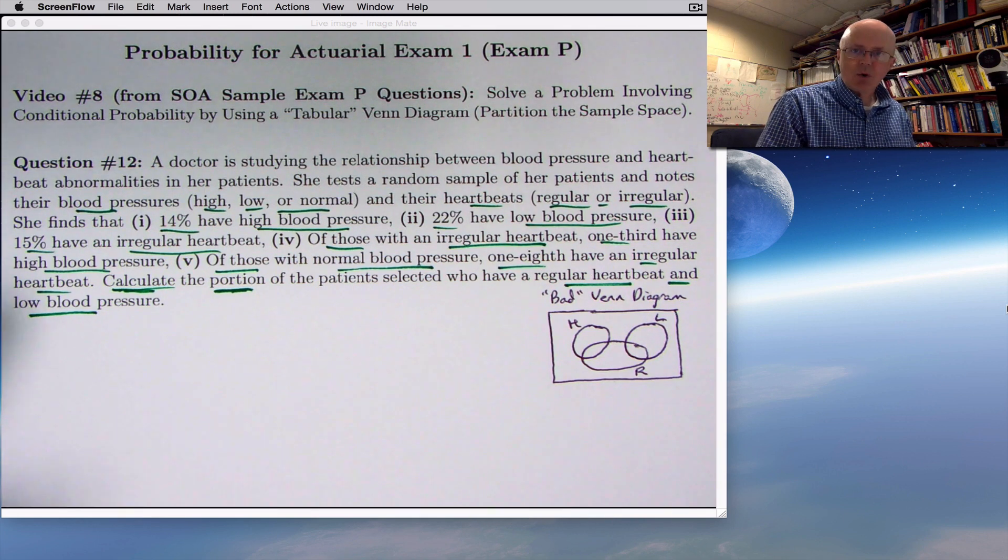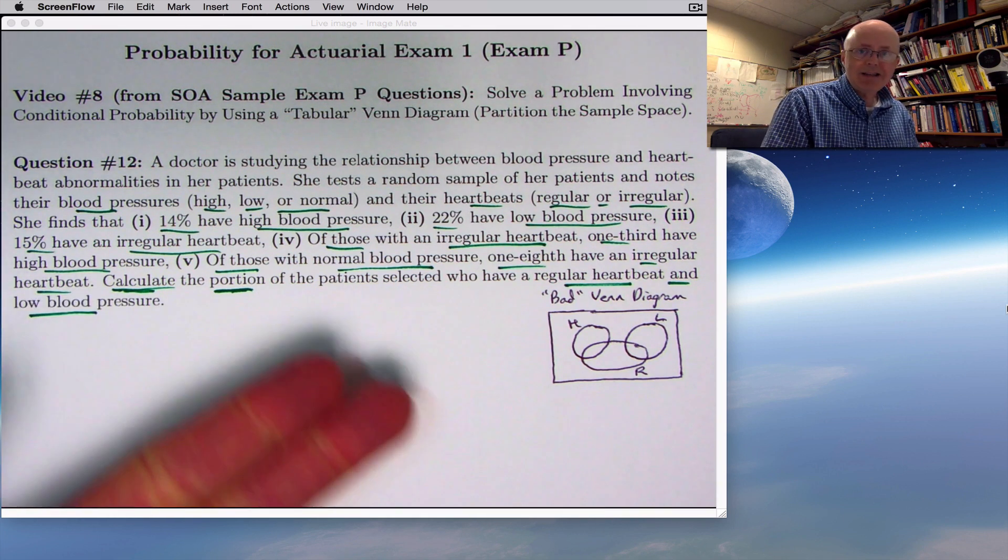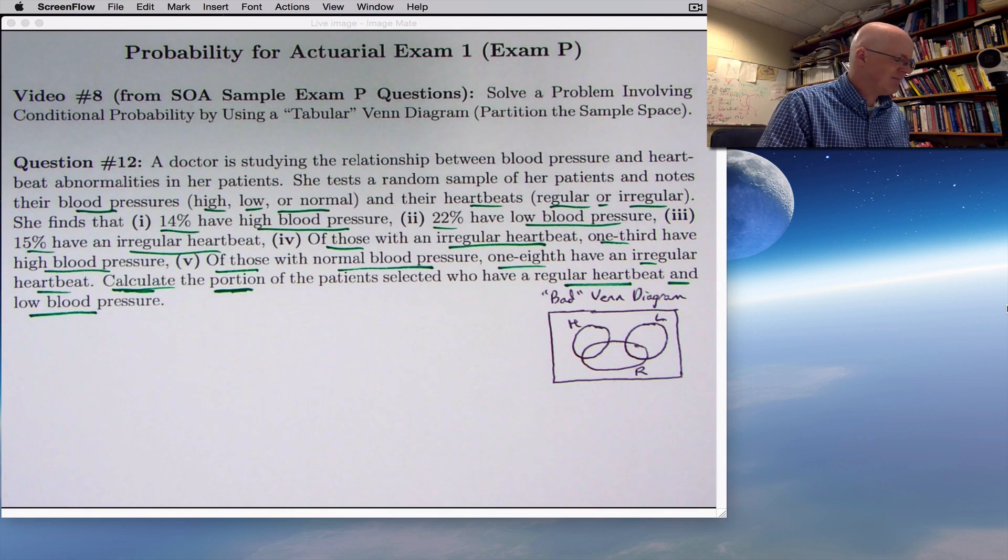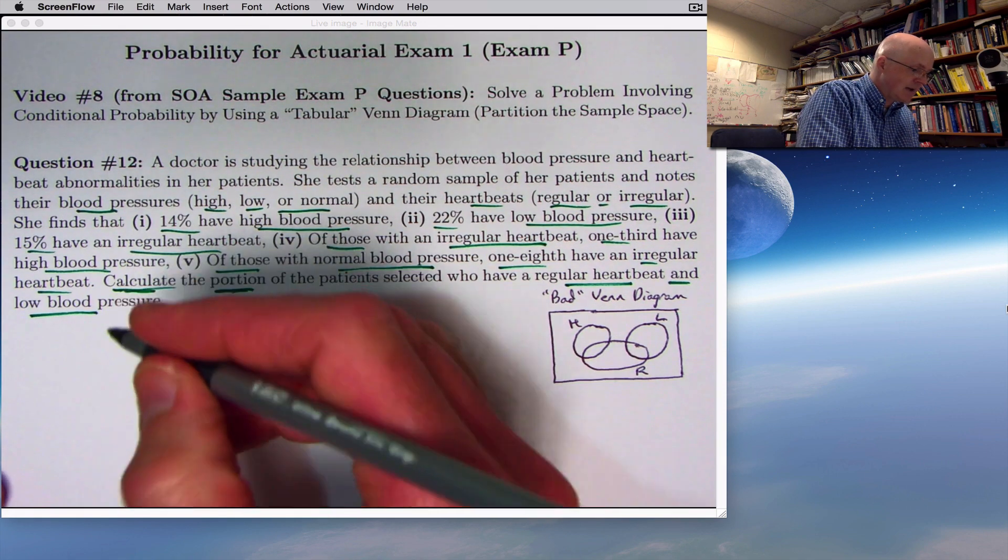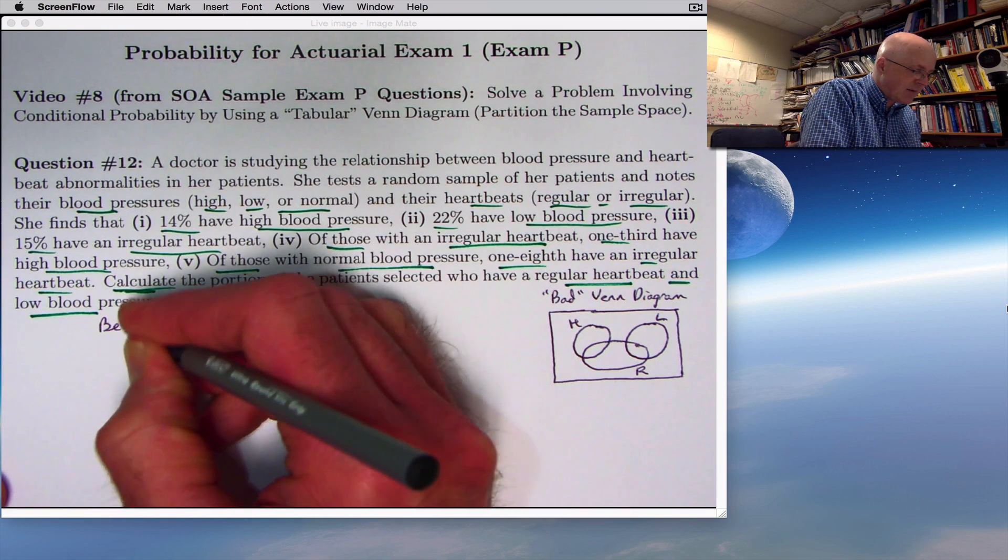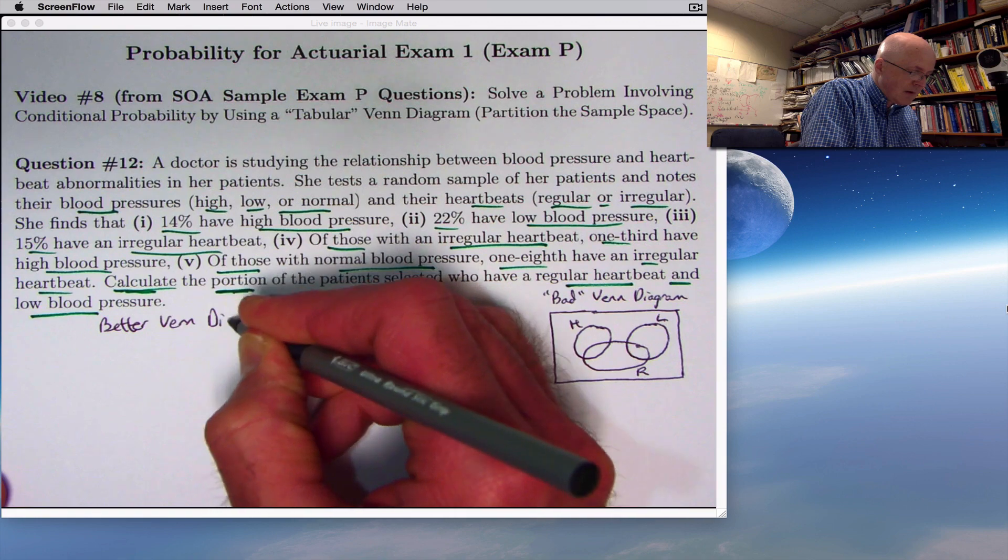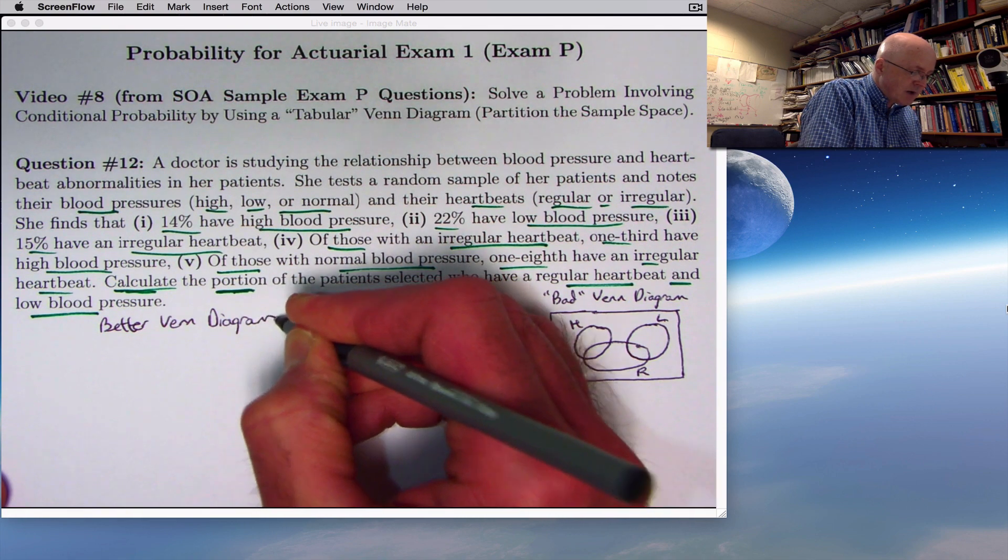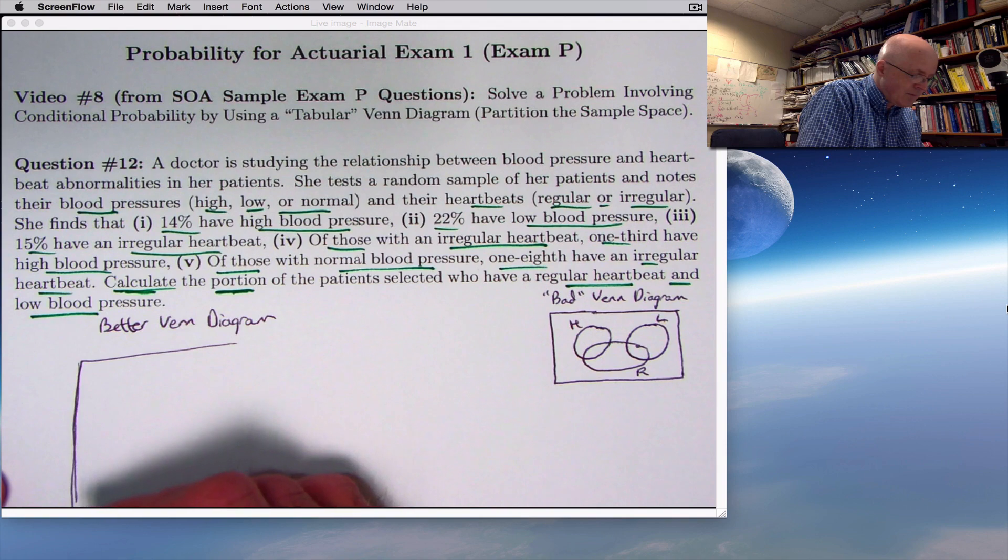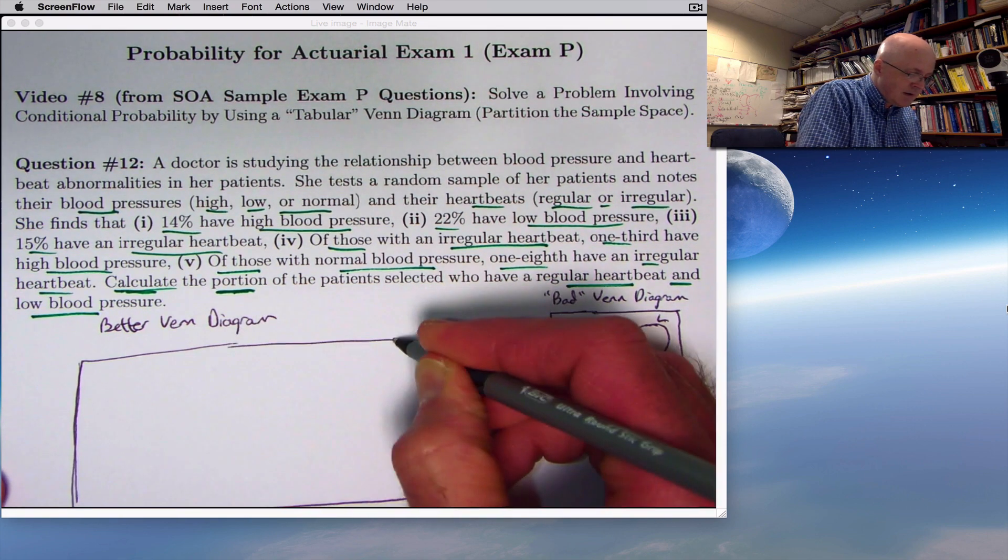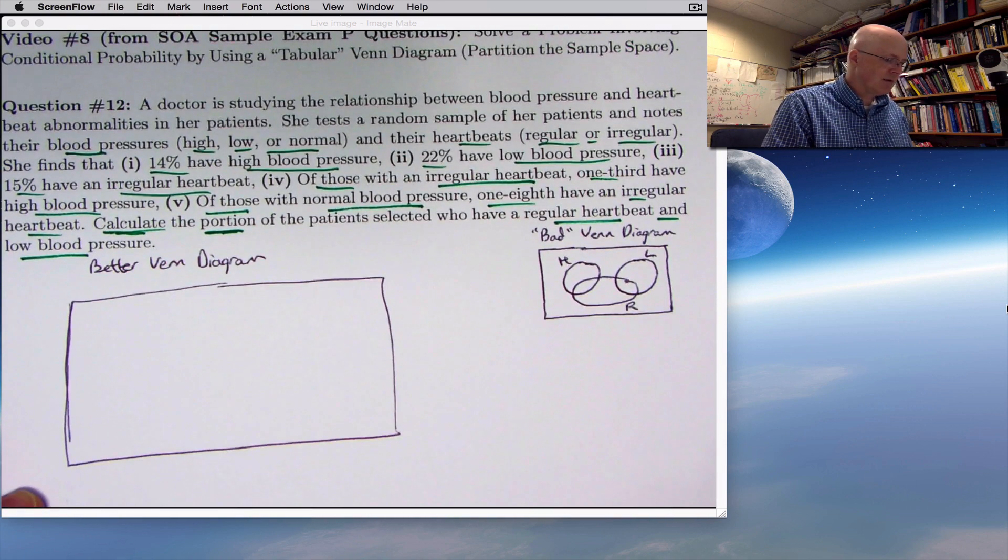So again, it's not that this is wrong. And again, I did solve the problem, but it just made it messy, it made it more confusing than it needed to be. So here's a better Venn diagram. Let me make this one bigger, a big box here. This is what we're going to focus on to solve the problem.